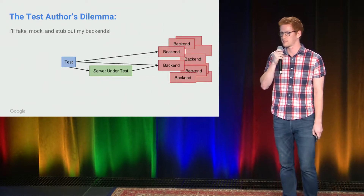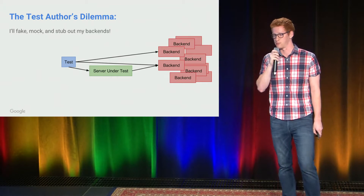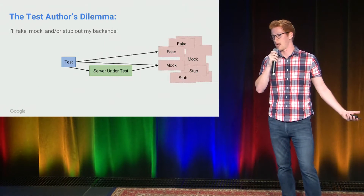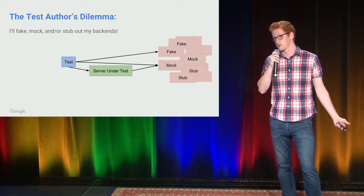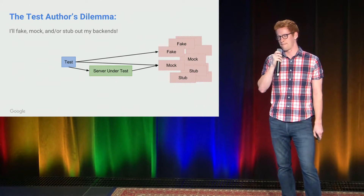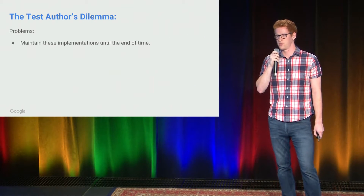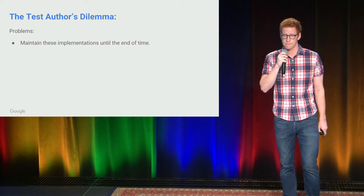The next response is for people to fake, mock, and stub out your backends. It actually does make your tests faster, and that's good news. The problem is that now you're going to maintain these implementations until the end of time, which really stinks, because for you to push a working binary, you need to make sure your code is in order but also that your mocks, fakes, and stubs for dependent servers that you don't actually care about are also working. So now you've increased the workload on your developers.